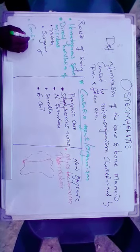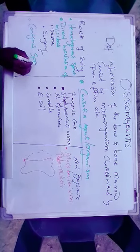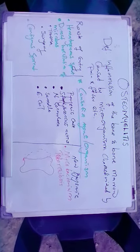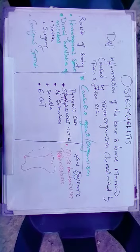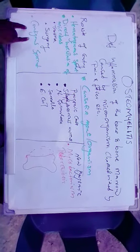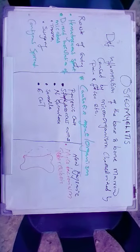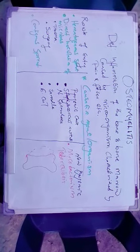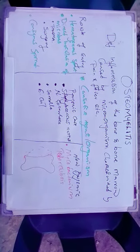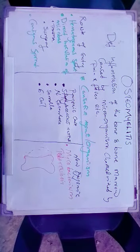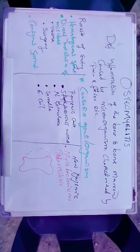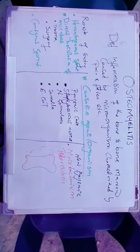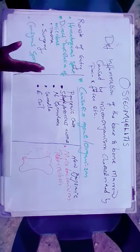The other route is contiguous spread — also called direct extension of neighboring soft tissue infection. Under contiguous spread, if someone has a skin infection such as cellulitis, that infection can spread from the skin, invade the soft tissue, reach the bone, and result in osteomyelitis.